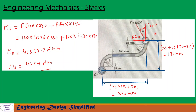Now let us look at the first portion of the problem where alpha equals 30 degrees. A force F equal to 120 Newton is acting at point A at an angle alpha from the vertical. Its vertical component will be written as F cos alpha, and its horizontal component as F sin alpha.